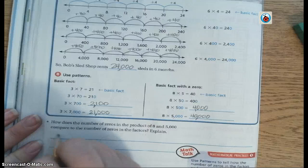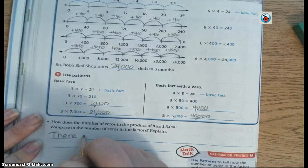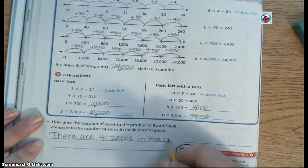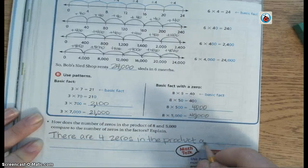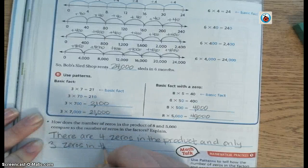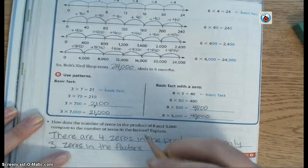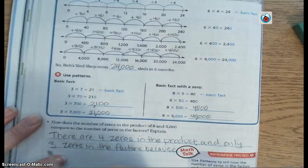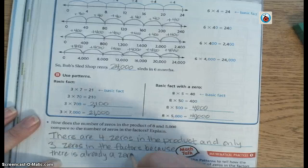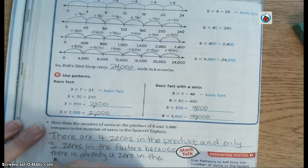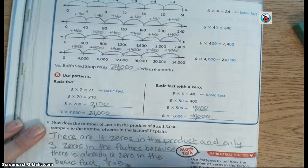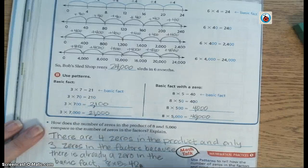The reason there's an extra 0 here is because there was a 0 in my answer already, in my basic fact answer. So I'm going to put that up here. There are 4 0s in the product, or the answer to my multiplication problem, and only 3 0s in the factors, because there is already a 0 in the basic fact. 8 times 5 equals 40. So there's my 0 that's already there.